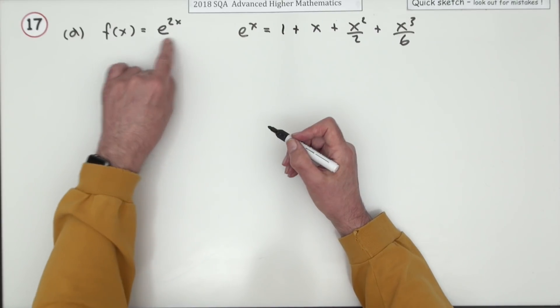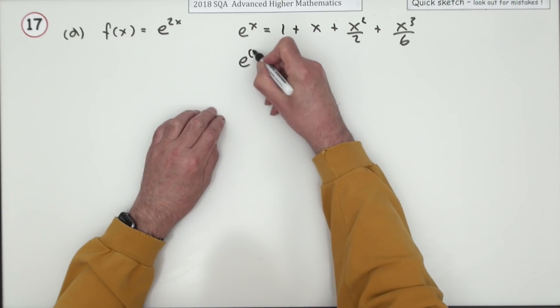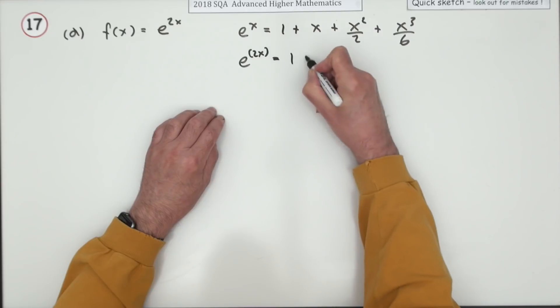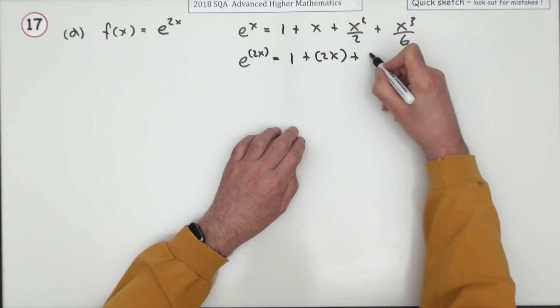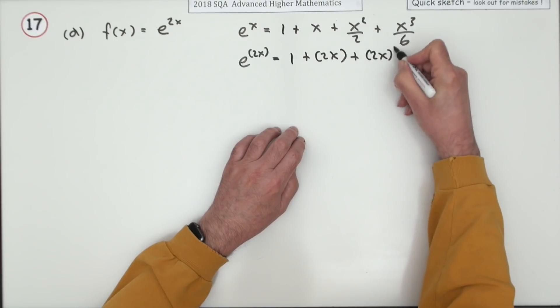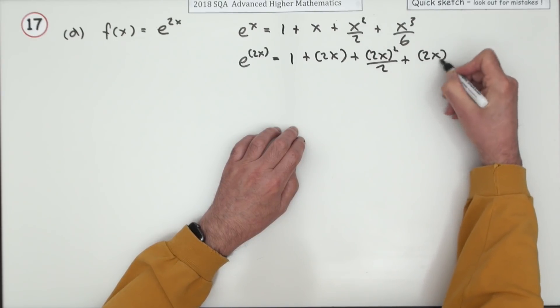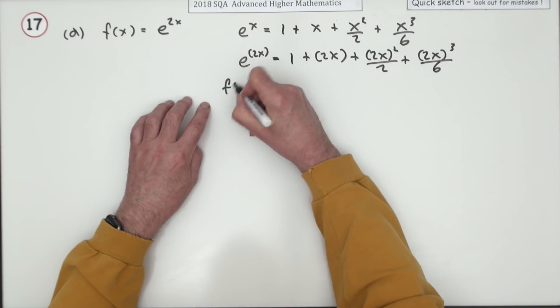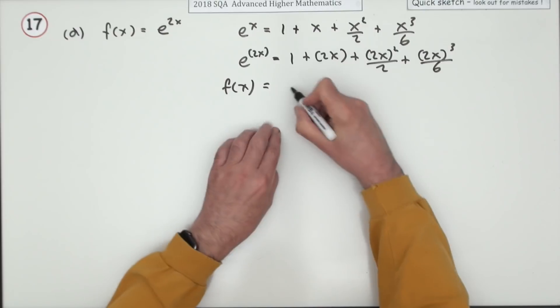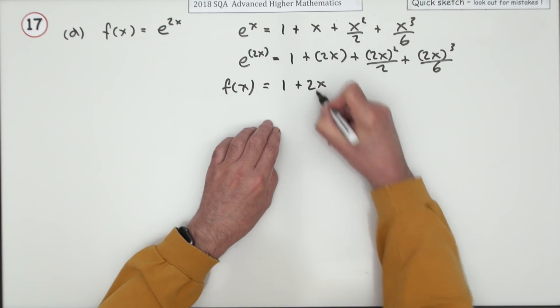So for this one then, if I want e to the 2x, you just pop 2x inside it. So it'll be 1 plus, I'll just put brackets around them just now because there'll be some tidying up to do, plus 2x all squared over 2 plus 2x all cubed over 6, which means that f of x is going to be tidying up 1 plus 2x.